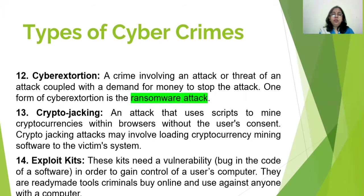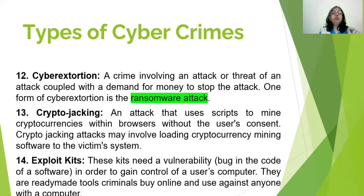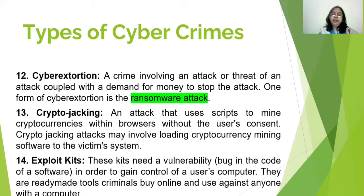Next is online scams — usually in the form of ads or spam emails — including promises of rewards in terms of money or offers of unrealistic amounts of money, which people easily fall into. Next is cyber extortion — a crime involving an attack or threat of an attack coupled with a demand for money to stop that attack; one common form is the ransomware attack. Next is crypto jacking — an attack that uses scripts to mine cryptocurrencies within browsers without the user's consent, and may involve loading cryptocurrency mining software onto the victim's system. Finally, exploit kits need a vulnerability — a bug in the code of software — to gain control of a user's computer; they are ready-made tools that criminals buy online and use against anyone with a computer.